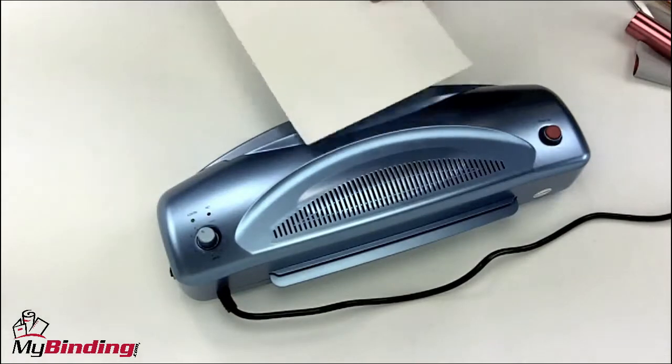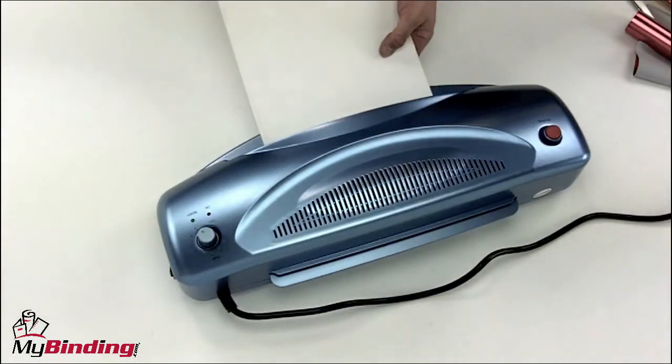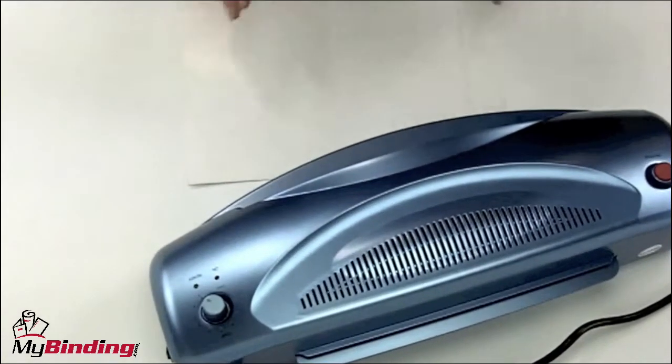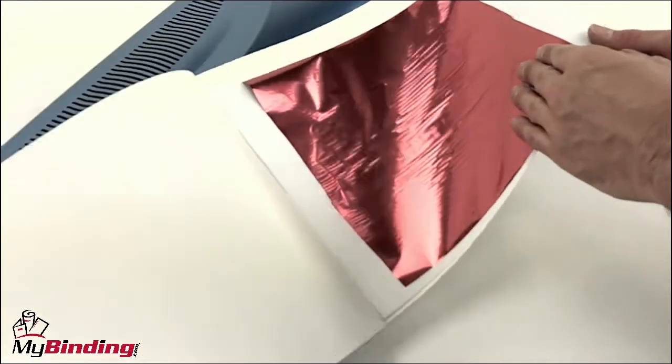When your laminator is ready at the correct setting, place the crease end of the carrier in first into the machine. Allow it to process all the way through and lay it down flat and let it cool for a few minutes for the best effect. The project is completely cooled.